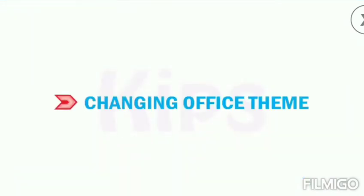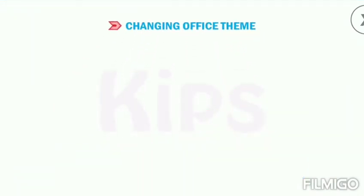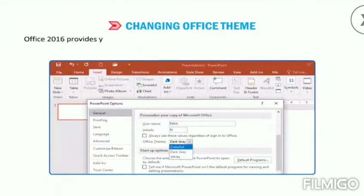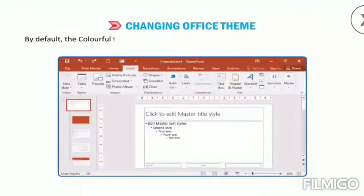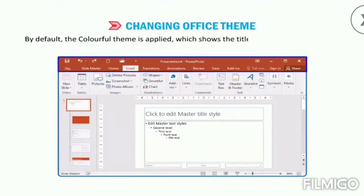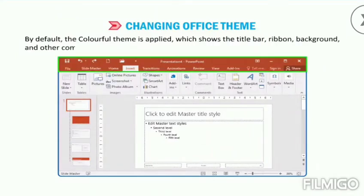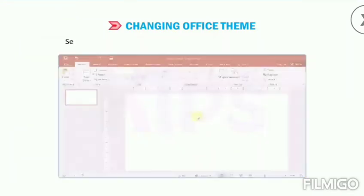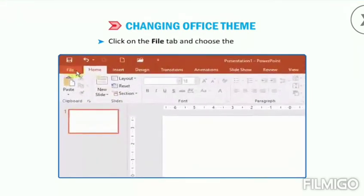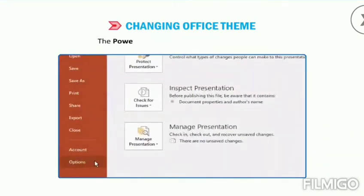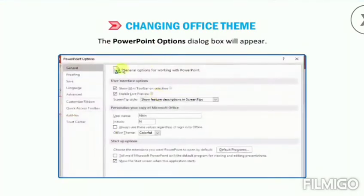Let us learn how to change the Office theme. Office 2016 provides you with three new themes that can be applied on PowerPoint 2016: Colorful, Dark Grey, and White. By default, a Colorful theme is applied which shows the title bar, ribbon, background and other components in orange colour. Selecting a new theme will change the colour of these components. Click on the File tab and choose Options. The PowerPoint Options dialog box will appear.